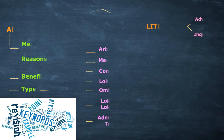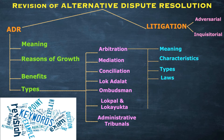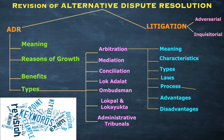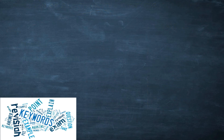Under arbitration, the topics covered are: meaning, characteristics of arbitration, types of arbitration, laws on arbitration, process of arbitration, advantages of arbitration, and disadvantages of arbitration. Under the heading of laws, we studied the Arbitration and Conciliation Act. Under process, we studied the four steps of arbitration.